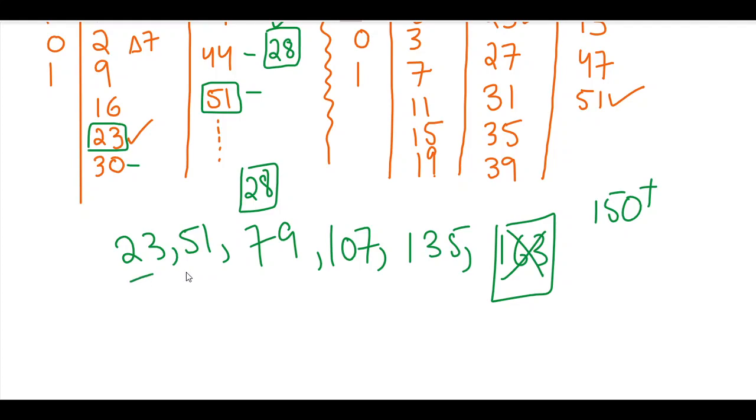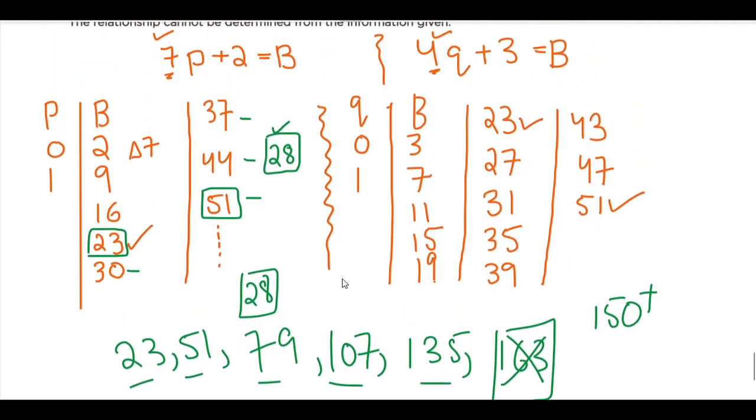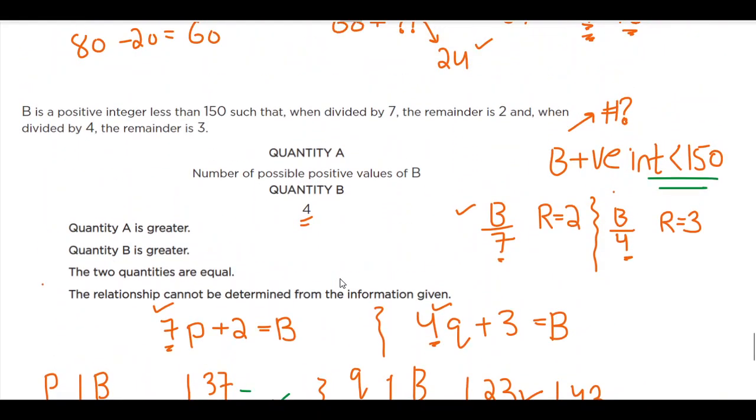So how many numbers are there? One, two, three, four, and a five. And if you come back up, quantity A is basically five and I have to compare it with a four. Therefore quantity A must be bigger. You guys follow so far?